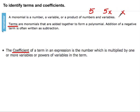5 times the value of x, or simply just x. All three of these are monomials. Terms are monomials that are added together to form a polynomial.